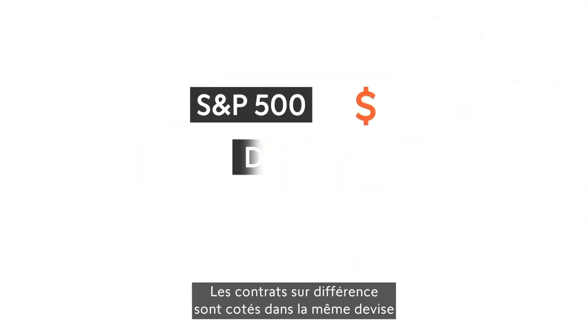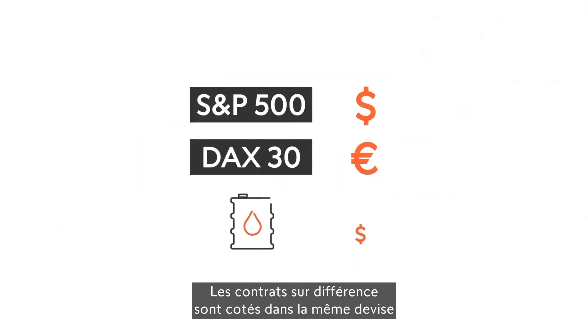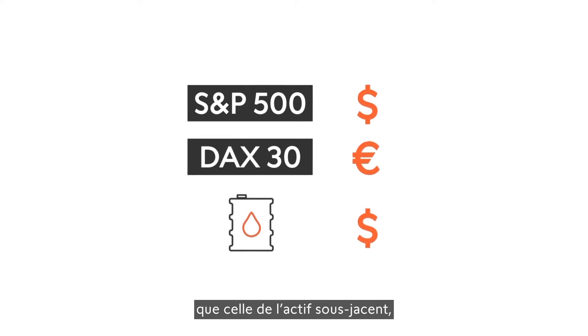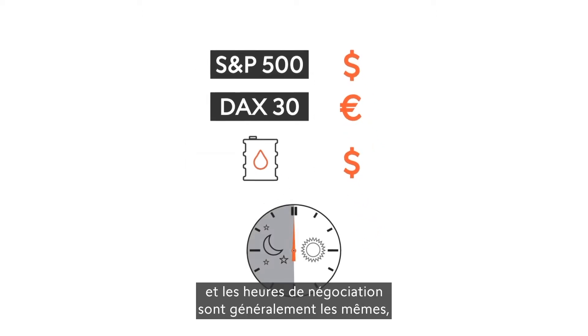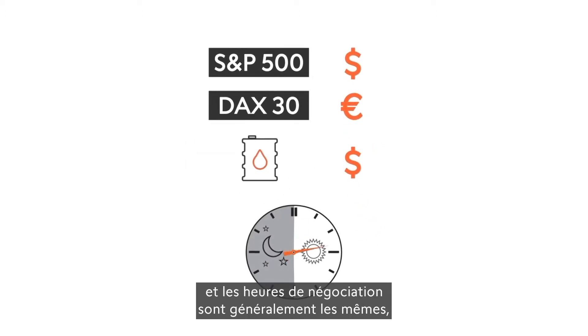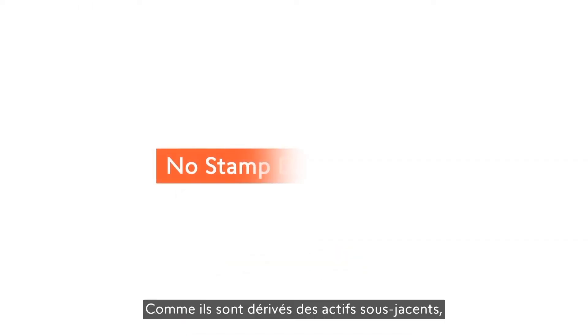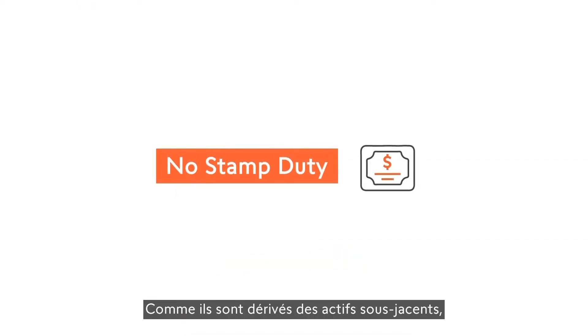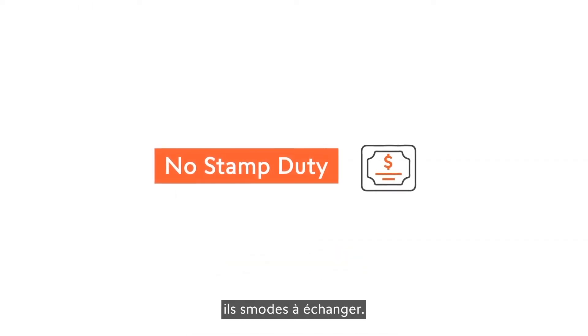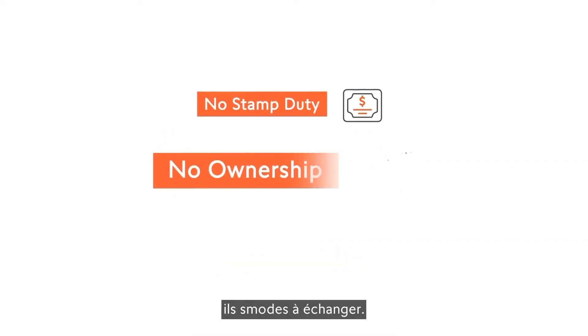Contracts for difference are quoted in the same currency as the underlying asset, and dealing hours are generally the same, sometimes even better. Since they derive from underlying assets, they are often more convenient to trade.